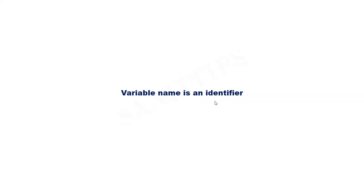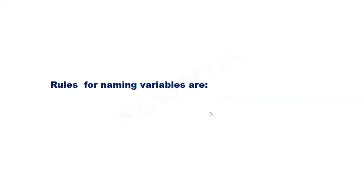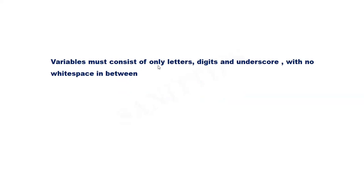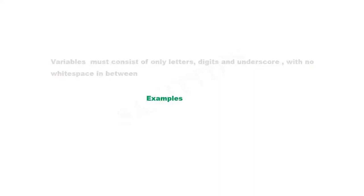A variable name can be any valid identifier, meaning it must follow the rules of identifier naming. Variables must consist of only letters, digits, and underscores with no white space in between. Some valid variable names include: amount (consists of only letters), roll_number (consists of letters and underscore), and sum_of_three_numbers (consists of letters, underscores, and numbers). These are all valid variable names.